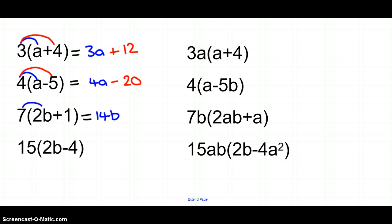This time doing 15 times 2b, so 15 lots of 2b is going to be—you got it—30b. And then we've got 15 times negative 4, so that's going to be negative 60.